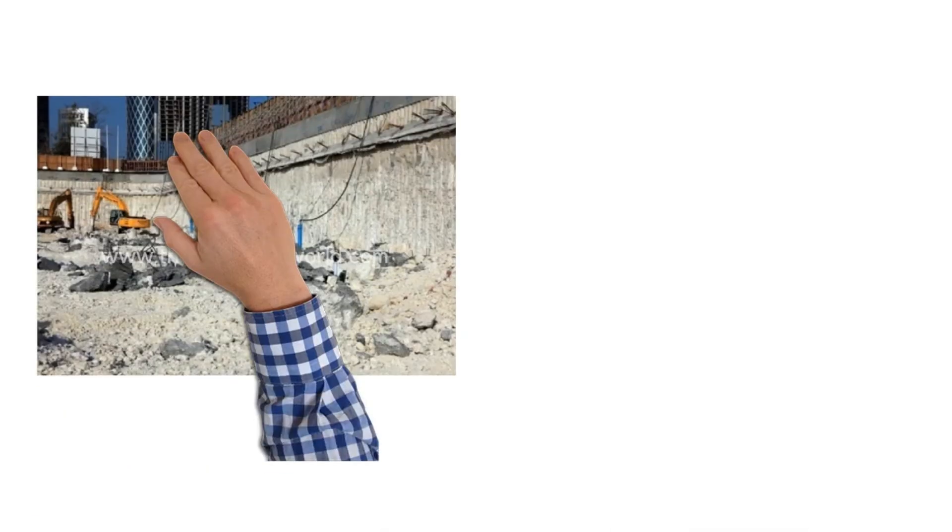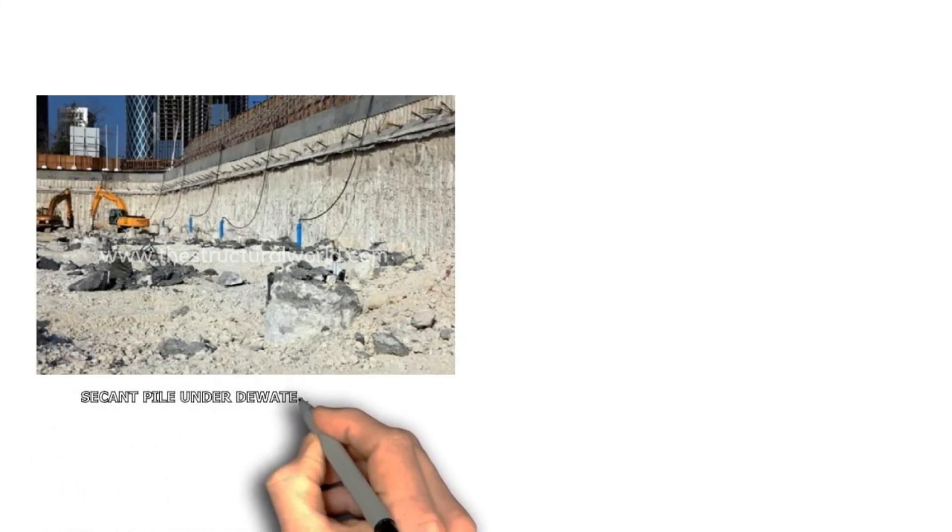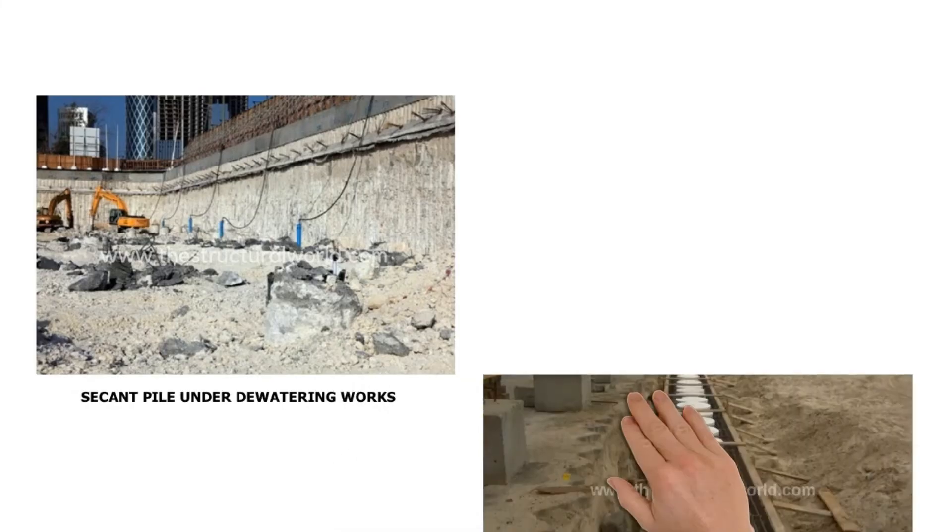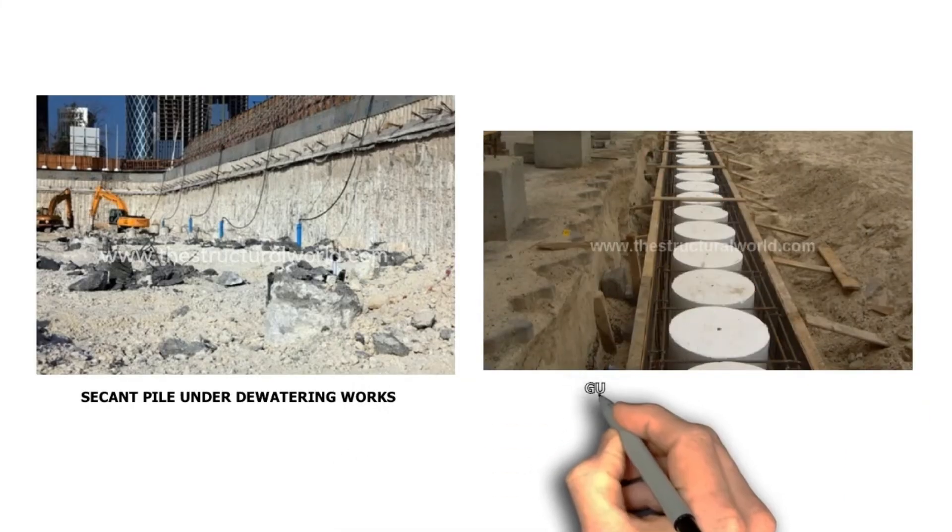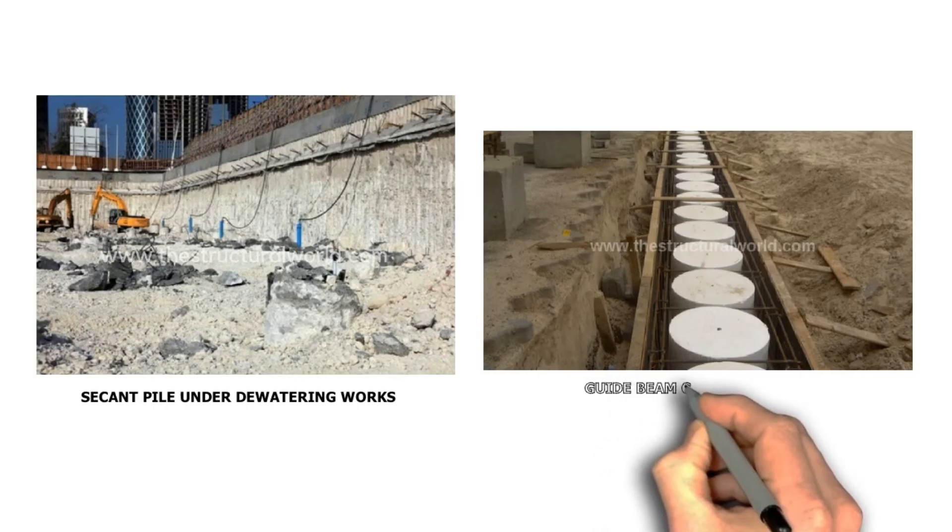Construction of contiguous pile is very similar to that of the secant piles. Prior to installation, a guide beam should be constructed to serve as a guide for the contiguous wall to install in place.